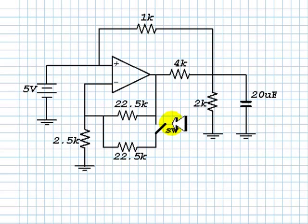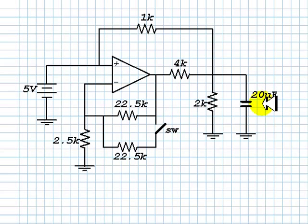This switch has been opened for a very long time. At t equals zero, the switch closes. Find what is the voltage in this capacitor as a function of time for t greater than zero.